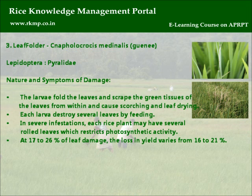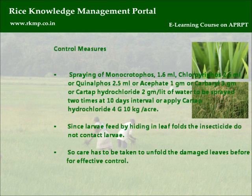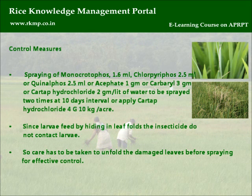Each larva destroys several leaves by feeding. In severe infestations, each rice plant may have several rolled leaves, which restricts photosynthetic activity. At 17 to 26% leaf damage, yield loss varies from 16 to 21%.